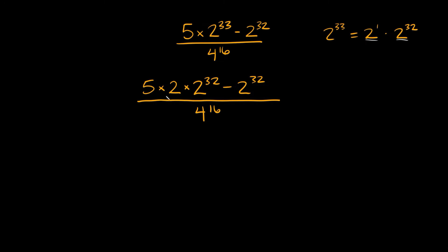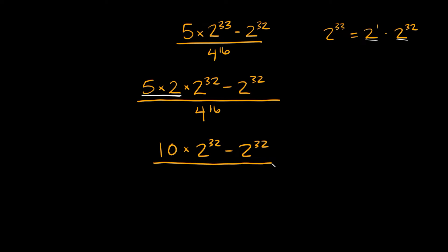One thing we can do right now is just combine like terms. So 5 times 2 equals 10, and we can simplify this to 10 times 2 raised to the 32nd minus 2 raised to the 32nd, all over 4 raised to the 16th. And again, you might notice that 16 is half of 32, so maybe there's a way we can use that to cancel things out.